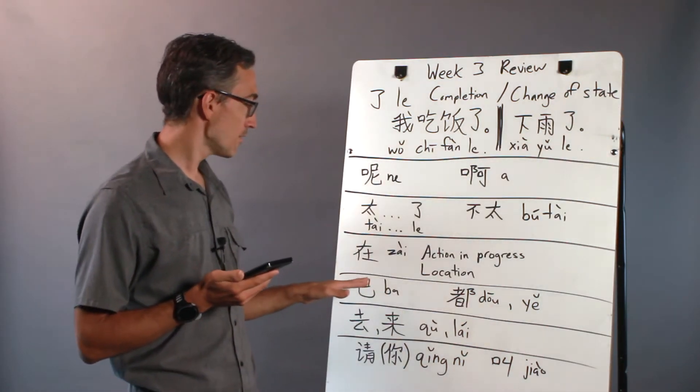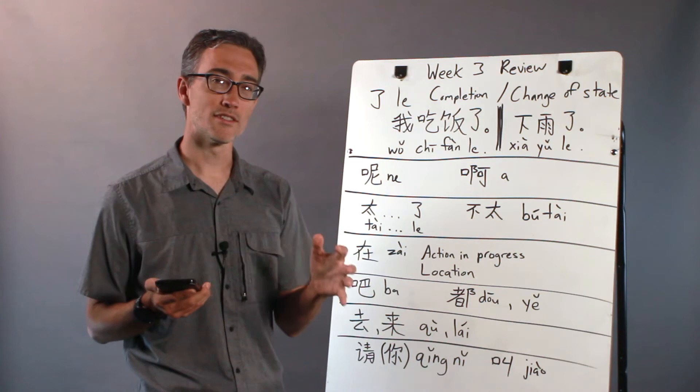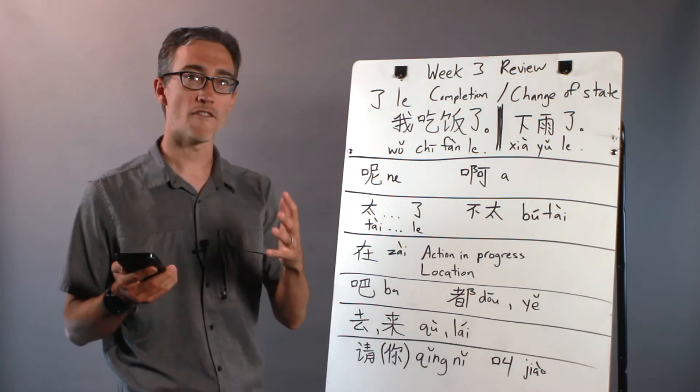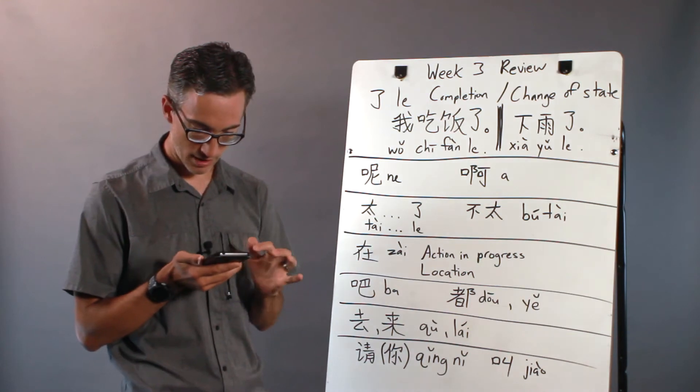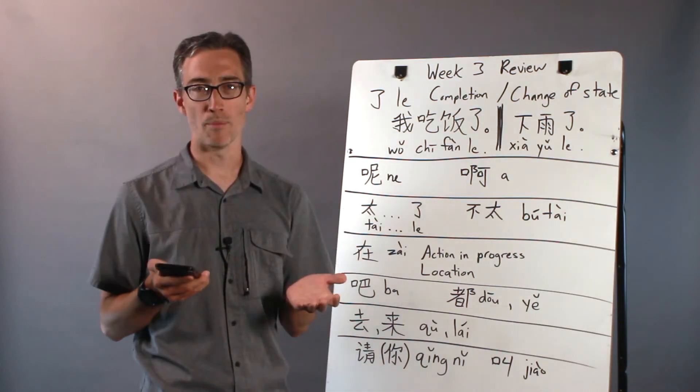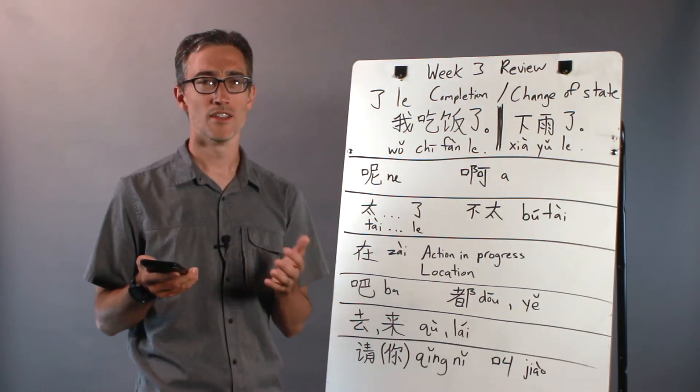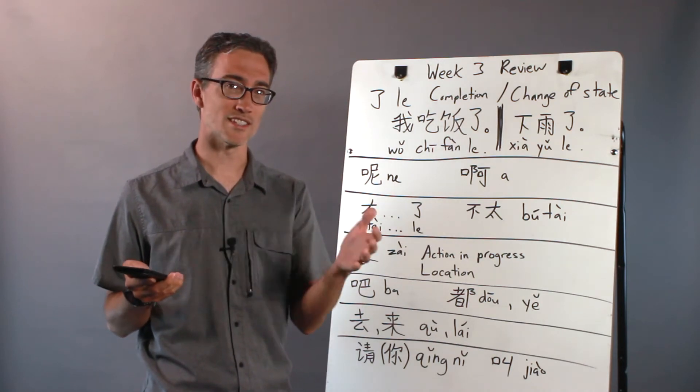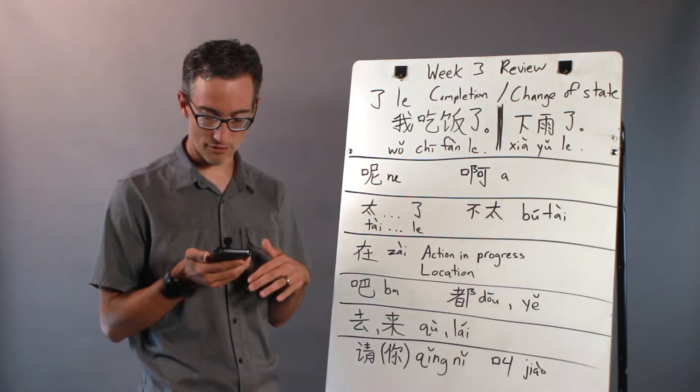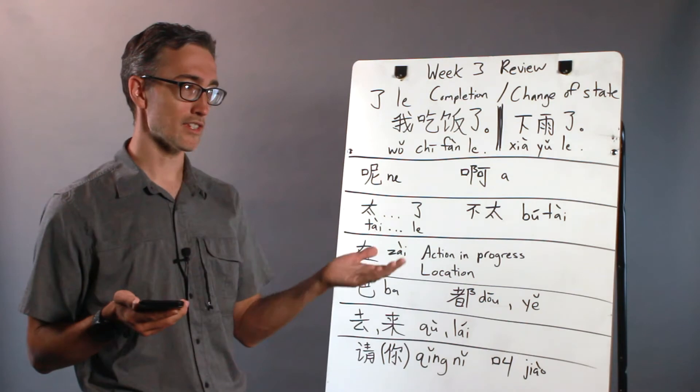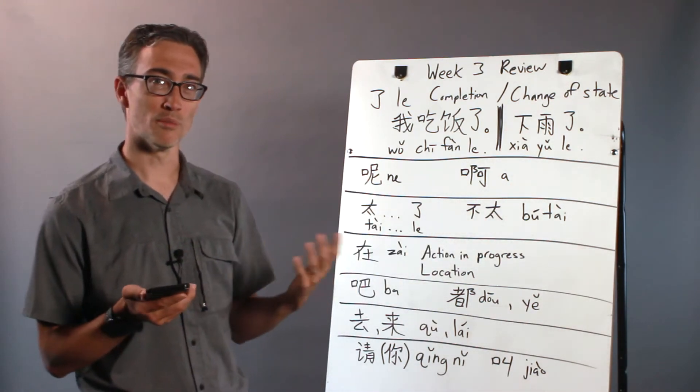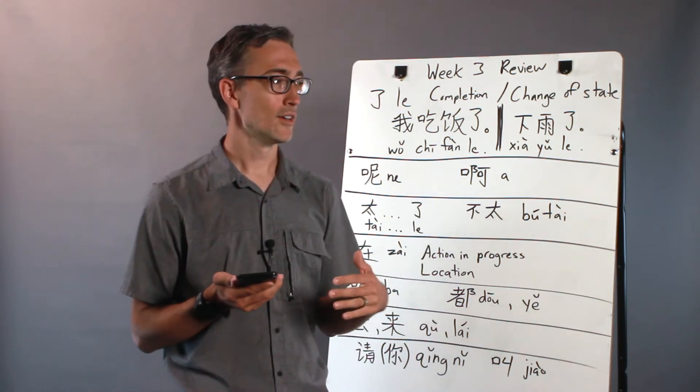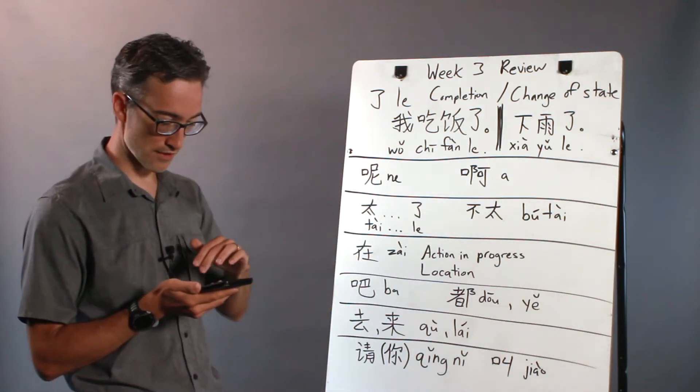Then we have 吧 (ba). 吧 is put at the end of a sentence or phrase to soften the overall feel of the sentence. Some examples would be 这样不太好吧, this is not very good, or doing it like this is not very good. It makes it softer. Or I think in the previous video 过来吧, come over here. It makes it, or could you come over here, maybe it would be a better translation. 过来吧, please come here, something to that effect. It softens it.